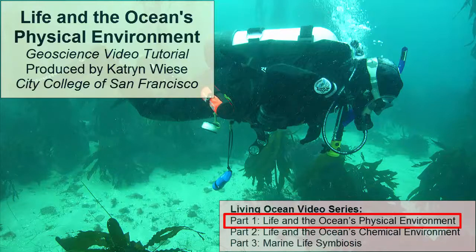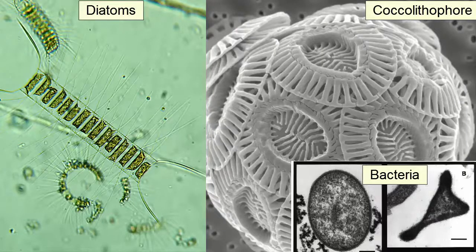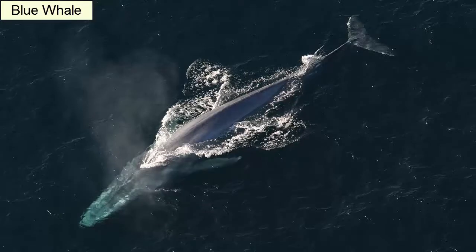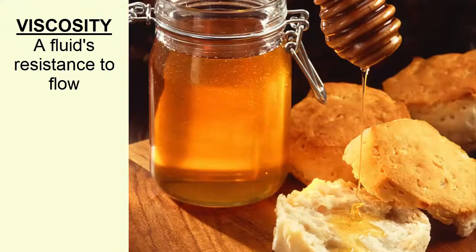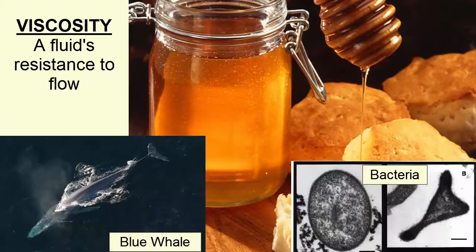Marine life in the oceans includes organisms of all sizes, shapes, and character — from the smallest bacteria and protists, single-celled heterotrophs and autotrophs visible only through the highest power microscopes, to the largest organism on planet Earth, the blue whale at 30 meters or 100 feet long. Each of these organisms interacts with and is affected by the oceans in different ways. The viscosity of water — a fluid's resistance to flow — plays a major role in how marine organisms of different sizes move through the oceans.